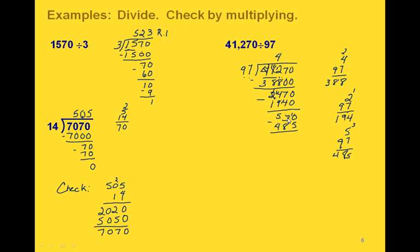So 5 times 97: 5 times 7 is 35, carry the 3, and 5 times 9 is 45 plus 3 gives us 48. So we've got 485 down here and we're going to subtract. We borrow: 10 minus 5 is 5; then 8 is bigger than 2, so we make that 12 and borrow from the next column: 12 minus 8 is 4 and 4 minus 4 is 0. Our final number 45 is smaller than 97, so we have 425 with a remainder of 45 as our final answer.